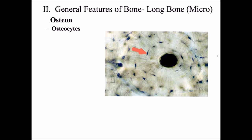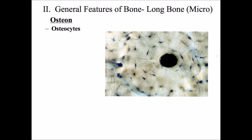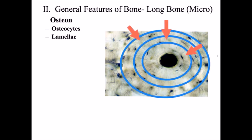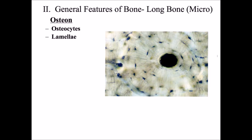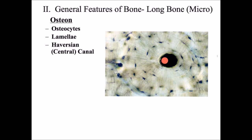An osteon is made up of several parts. The first part is an osteocyte — a mature bone cell that maintains bone; the little black dots you see are all osteocytes. Osteocytes help maintain and possibly produce bone, and the bone they produce is a ring of bone called a lamella. When you look at the osteon you can see these concentric rings of bone, which are the lamella. At the center of an osteon is the Haversian canal, or central canal, which contains blood vessels — arteries and veins — running through it.